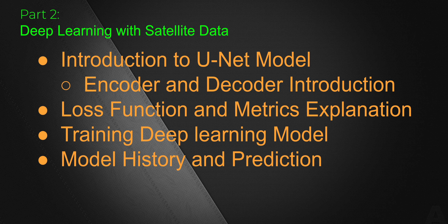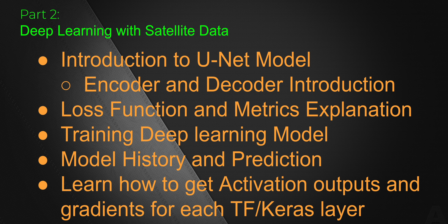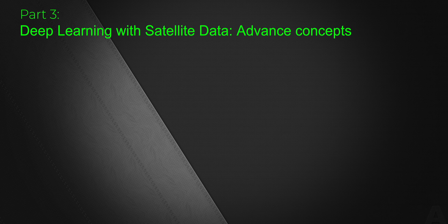We will learn the model history and apply the model for serving or to generate predictions. After the first iteration of our deep learning, we will apply another Python library so that we can get the activation outputs as well as the gradients for each layer in our deep learning network. The third part will be the extension of our second part, where we are going to apply various advanced concepts in our deep learning process.